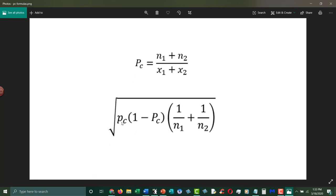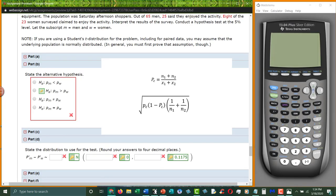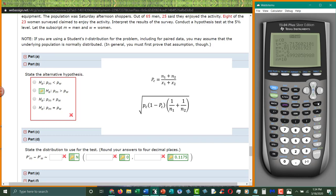The square root of the combined probability times 1 minus the combined probability, so P_C times (1 minus P_C) times the quantity (1 over N_1 plus 1 over N_2). Where P_C is equal to the number of successes (X_1 plus X_2) divided by the total number of things that were surveyed (N_1 plus N_2). I'll bring this back up again as a thumbnail so you can see it again later.